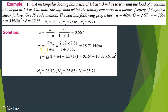We require the bulk density value for the formula. There is a relationship between bulk density and dry density: gamma_D equals gamma divided by 1 plus W. Rearranging, gamma equals gamma_D into 1 plus W. Substituting gamma_D equals 15.71 and W equals 0.15, we get gamma equal to 18.07 kilonewton per meter square.